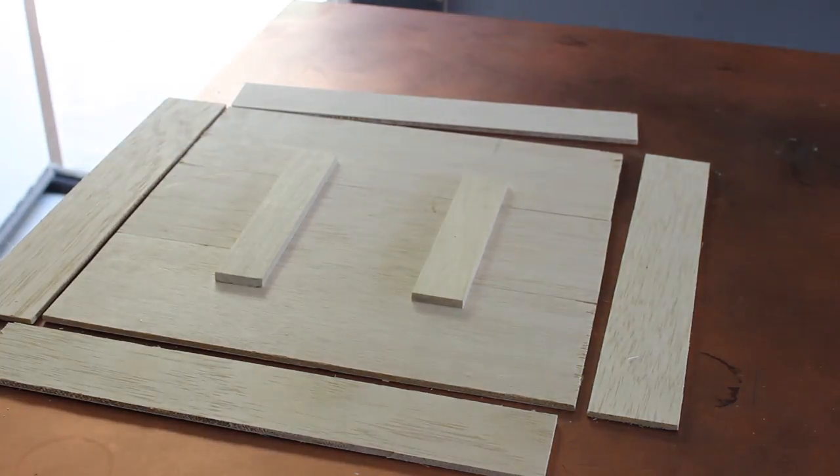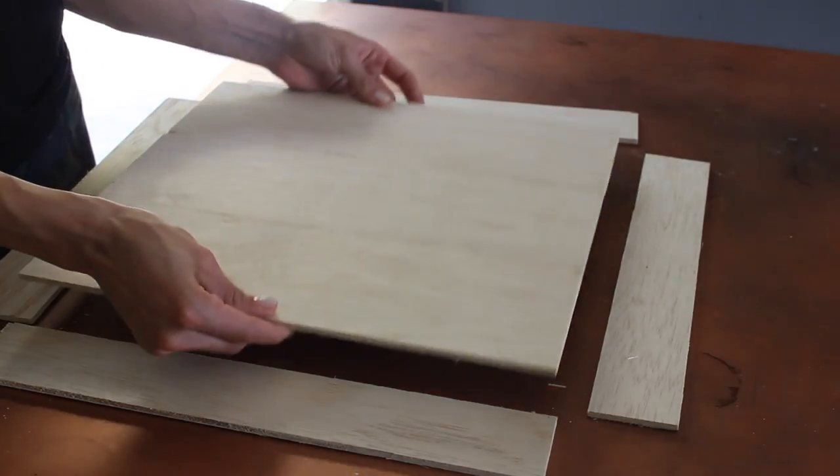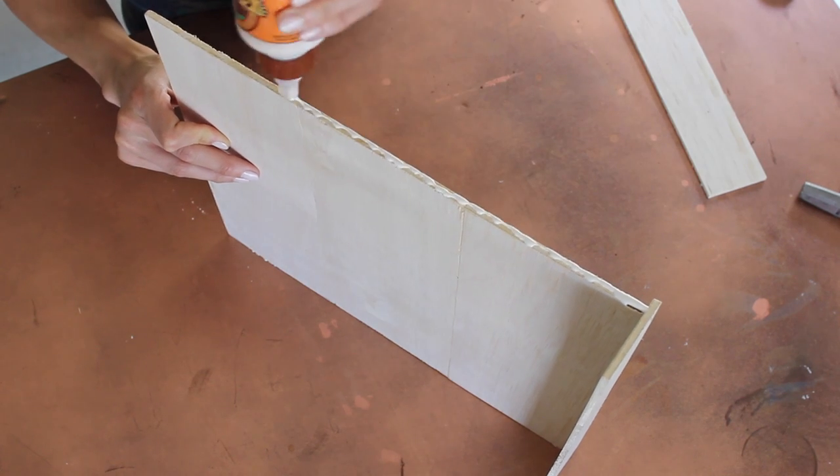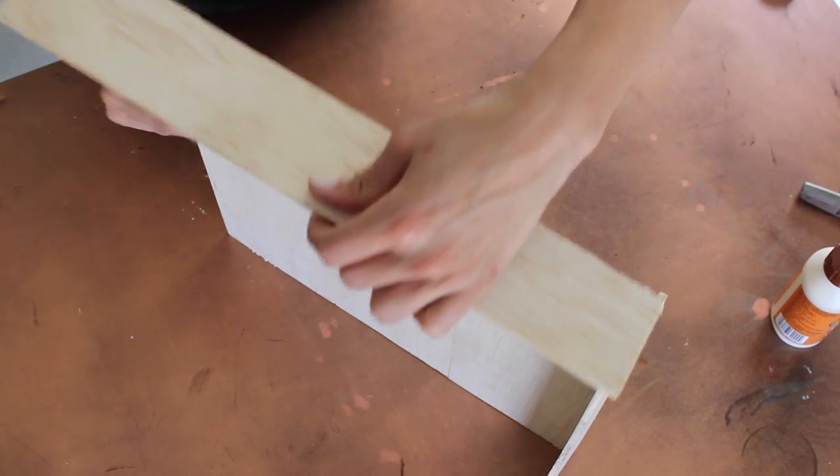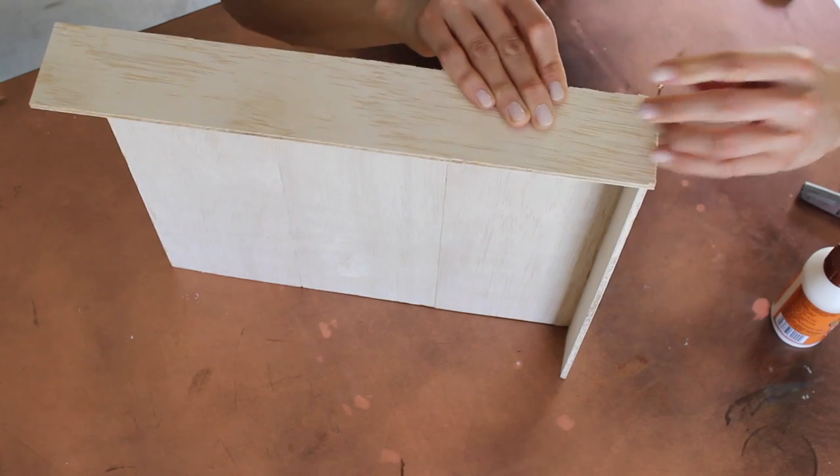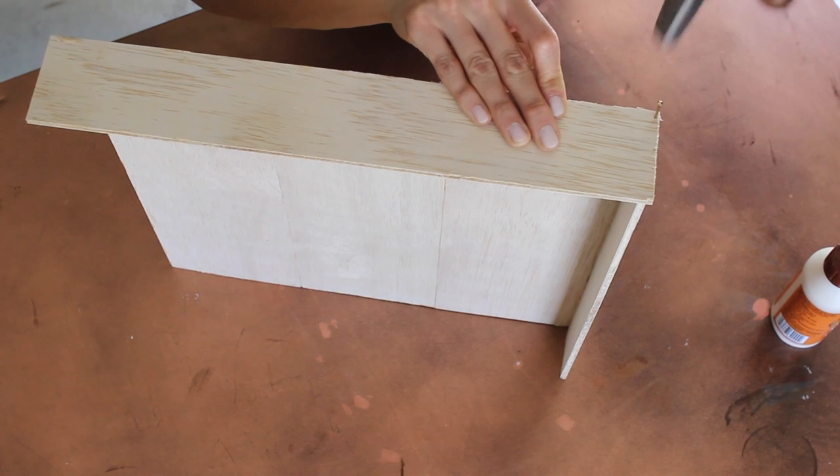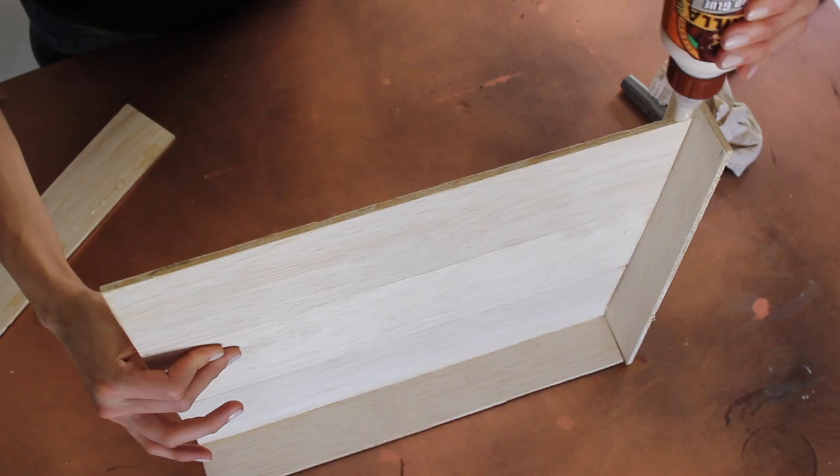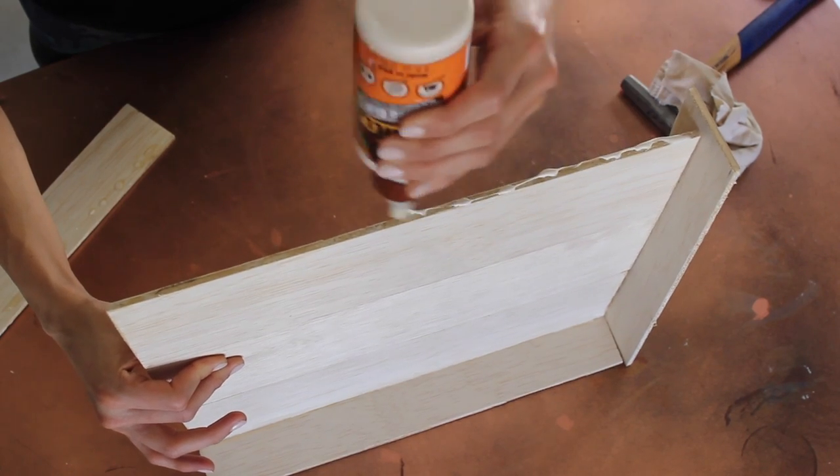Once the back piece is dried together you're going to flip it over and we're going to add the edges. Trim the edge that you're working on with wood glue. Take your wall piece or whatever side you're working with, add it right on top, take your hammer and your finishing nails and you're just going to literally hammer it right on in. Now repeat that to all the sides.